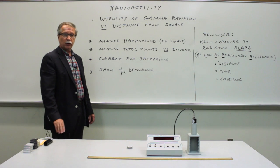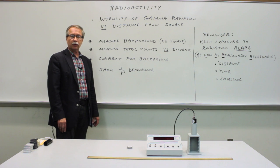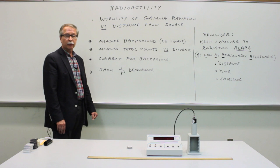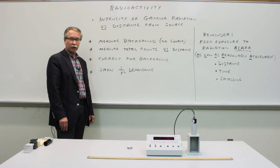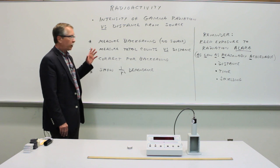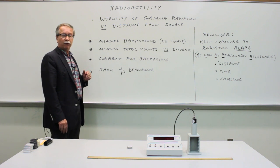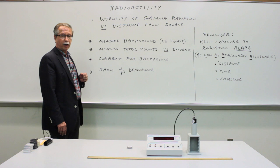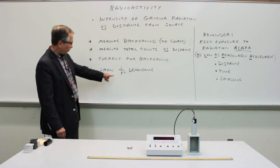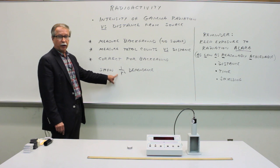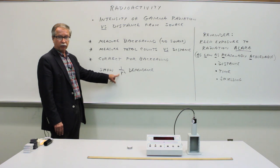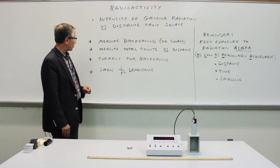Welcome back to Experimental Physics and our series of experiments involving radioactivity. In this experiment we will determine the dependence on distance of the intensity of gamma radiation. We'll measure the number of counts of gamma particles as a function of distance from a point source, and the objective is to show by some quantitative means that the dependence shows an inverse square relationship on distance.